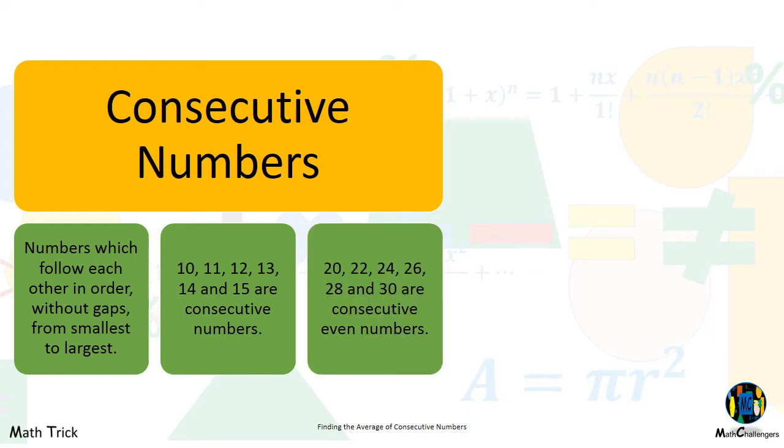20, 22, 24, 26, 28 and 30 are consecutive even numbers.